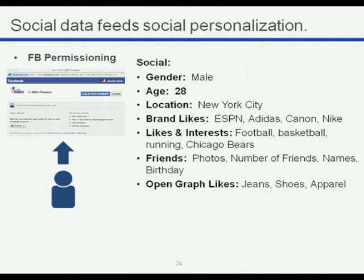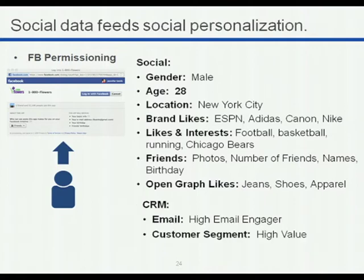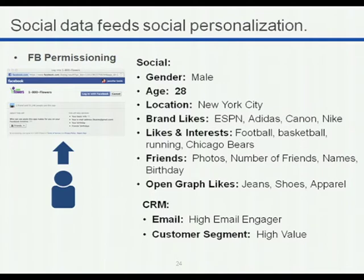This Facebook permissioning process unlocks traditional data. For a given user — say they're male, 28, live in New York City — you get their brand likes like ESPN, Adidas, Canon, their specific Open Graph likes. Then you merge that with CRM, and all of a sudden you can create segmentation on not only who this user is from a social profile standpoint, what they like and how influential they are, but from a customer segmentation standpoint. You might see a correlation between high-value customers and a certain social profile. You just need access to the data, and to get that you need a smart experience on your site.